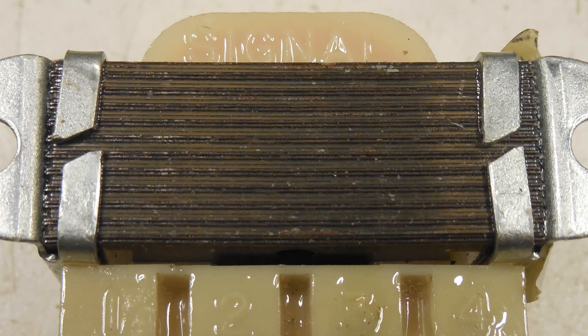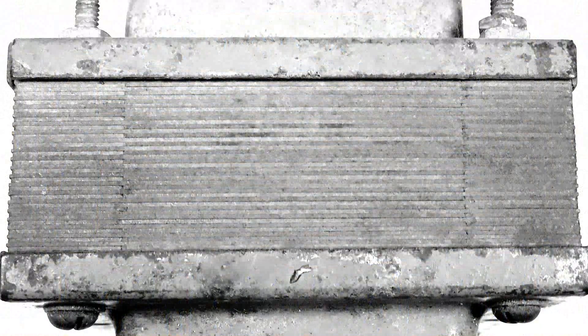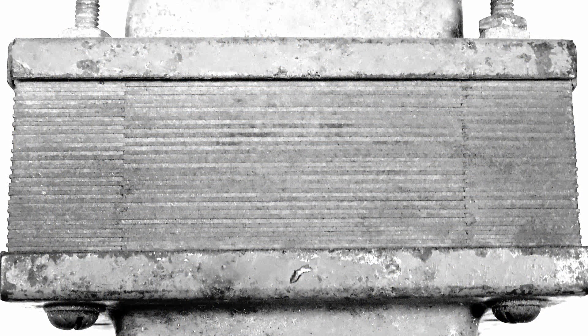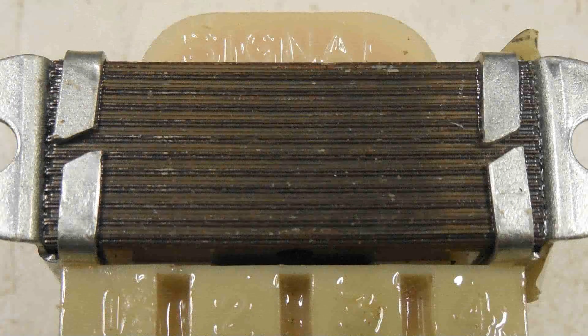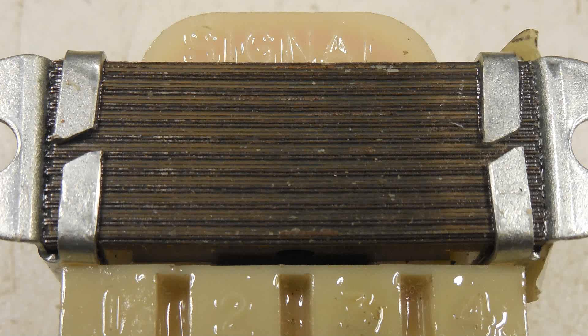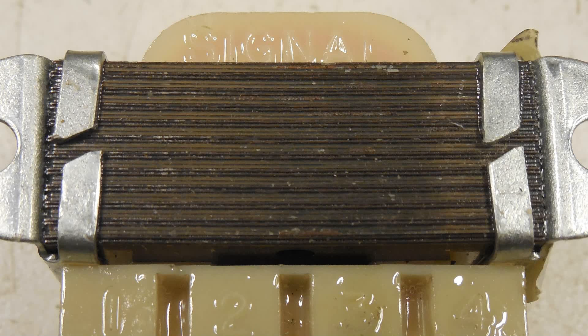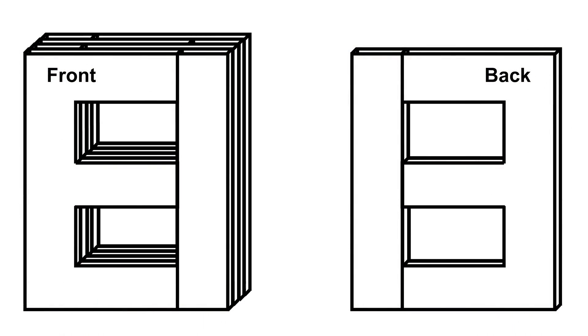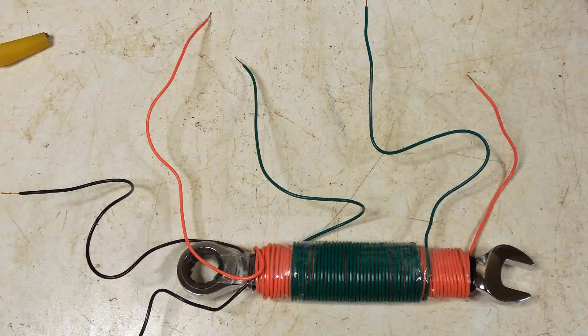The laminations are thinner because that helps to improve the frequency response of this audio transformer. The thickness of the power transformer laminations is fine for just 60 cycles. But this audio transformer has got to cover a much wider range of frequencies. So they make the laminations thinner.